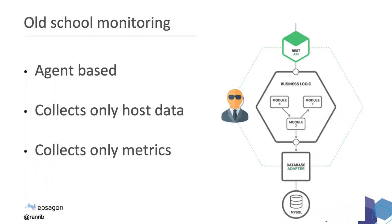In old-school monitoring, we used to have a service exposed through a REST API with business logic and a database all on the same server. To gain metrics, the old-school approach was to put an agent on your web server that would ship out metrics. These are only host-level metrics — not application-level insights. I can see processes, CPU, and memory, but nothing about the core insights of my application. It only collects metrics, not payloads or information — just tells you there was an error, but not what the error was.